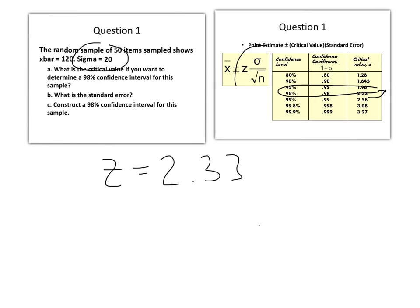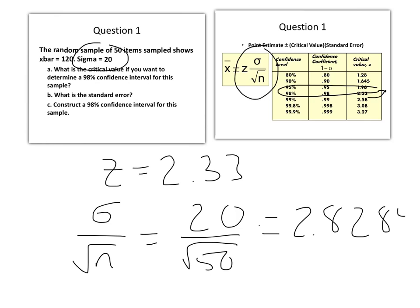The next part says what is the standard error. Standard error is Sigma over square root of n, which is 20 over the square root of 50, which is 2.8284.